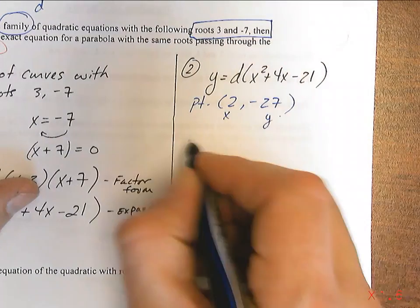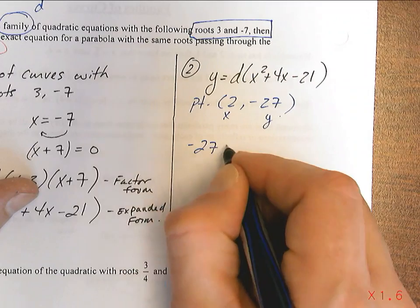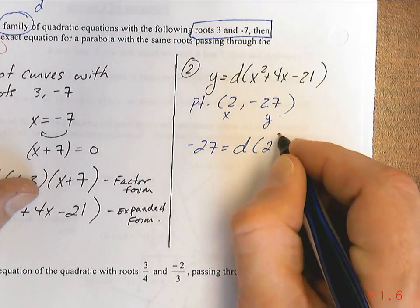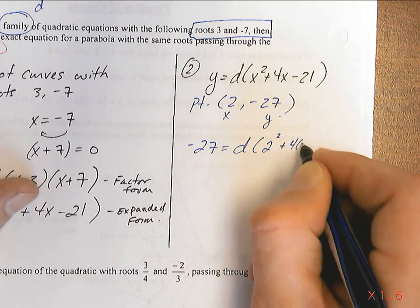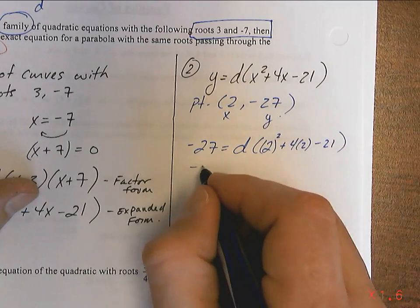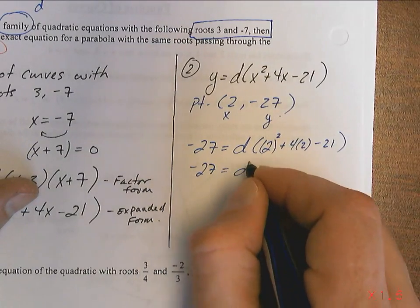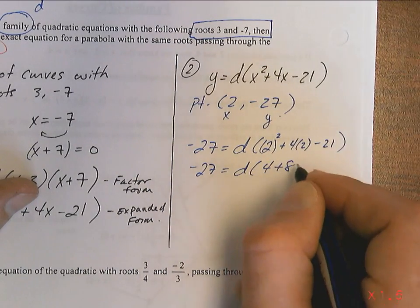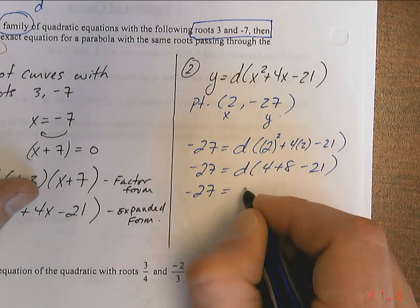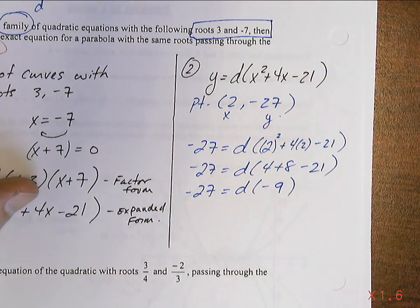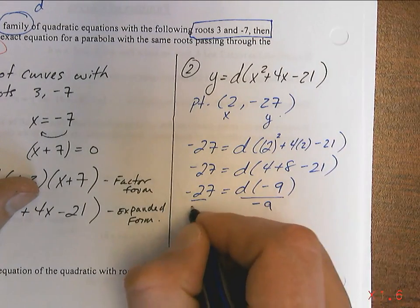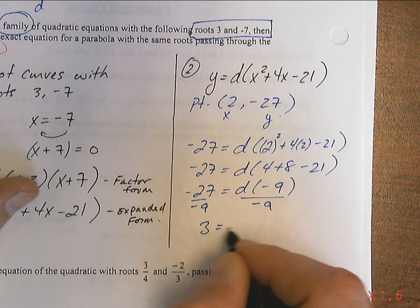So this is your x. This is your y. So what happens is you get negative 27 equals d and we put a 2 in everywhere there's an x. 2 squared plus 4 times 2 minus 21. That's going to be negative 27 equals d times 4 plus 8 minus 21. That's going to be negative 27 equals d times negative 9. Divide both sides by negative 9.